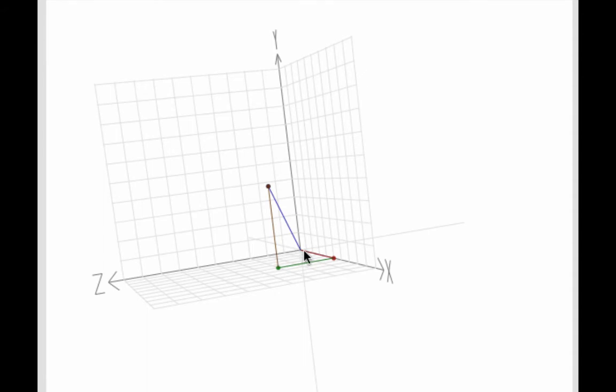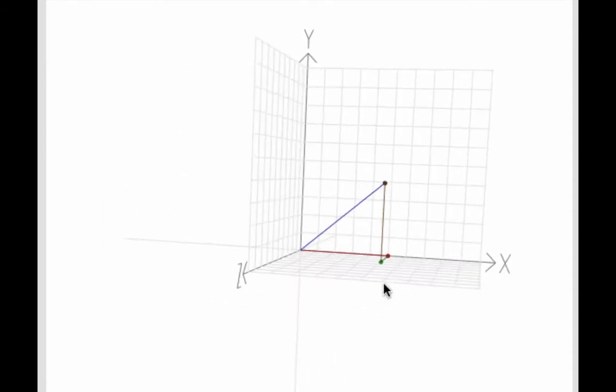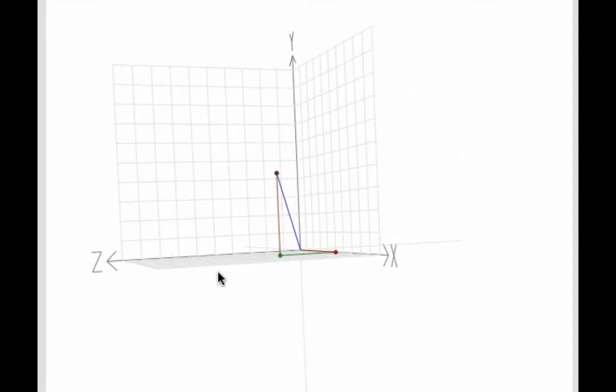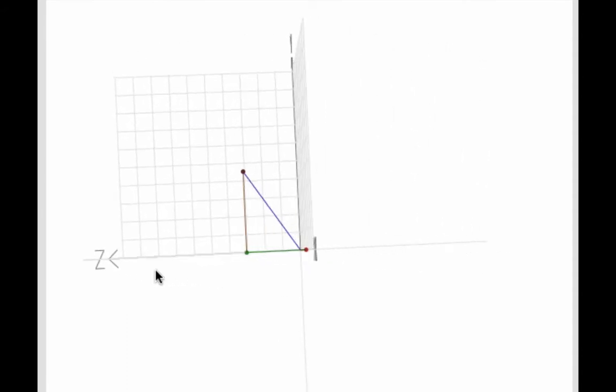We can see that this vector has x-coordinate 5, y-coordinate 4, and z-coordinate 3.